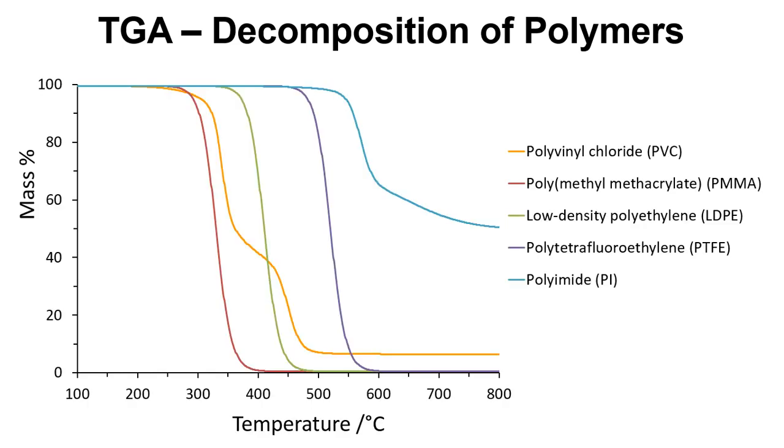If we look at an example of some TGA traces for different materials, the first one here is PMMA. We can see that it goes down to 0%. This tells us that the thermal stability is around just over 300 degrees, and because it goes down to 0%, there's no filler in there.